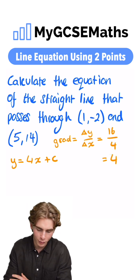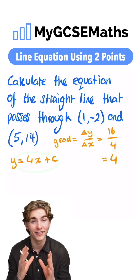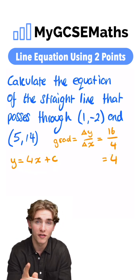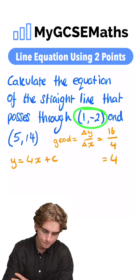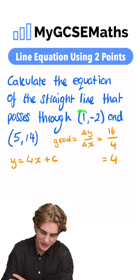Now how can we find the value of c given this information? What we're going to need to do is substitute in one of our points. It can be either one and use that to find out c. Let's choose this point here. This point here has x equal to 1 and y equal to -2.